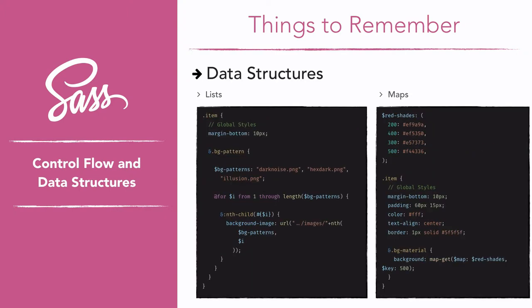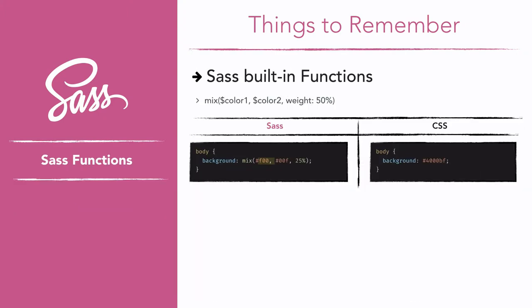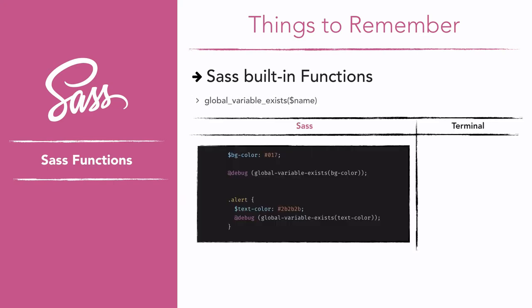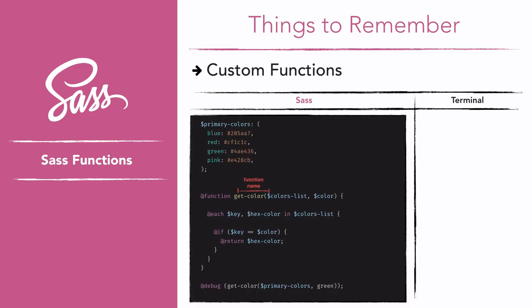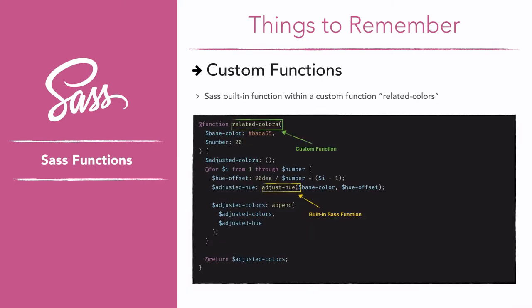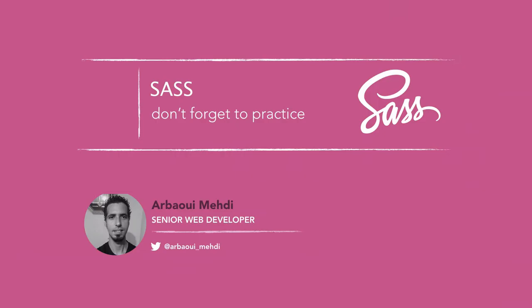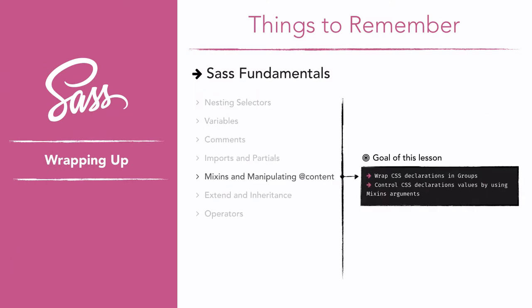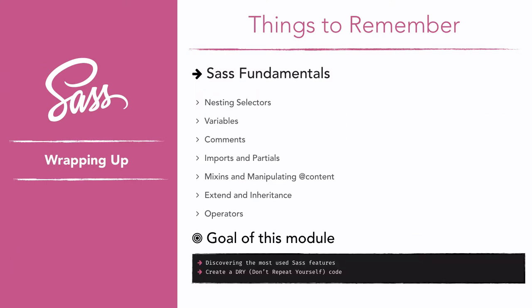We'll generate specific code depending on a specific situation. At the end, we'll use some built-in Sass functions, which are used by most popular frameworks like Bootstrap. Then we'll finish by creating our own custom Sass function — so we start from the basics and end up creating a custom Sass function.